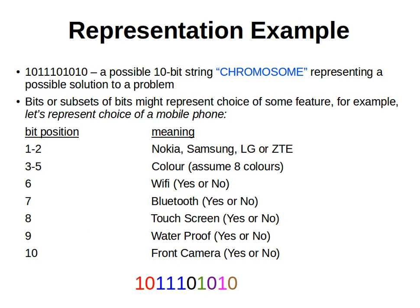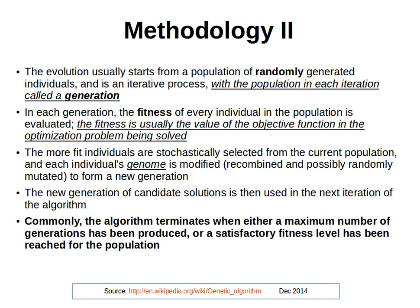Things will hopefully make sense when we explain the operators more and then have a look at some Java implementation. The evolution usually starts from a population of randomly generated individuals. As we said before, we can know some possible solutions, so we'll randomly generate these possible solutions and then iteratively try to come up with better solutions. The evolution is quite iterative, with the population in each iteration called a generation.